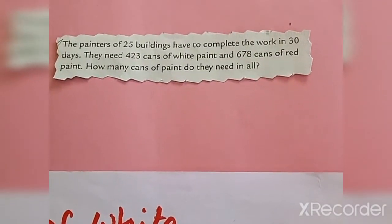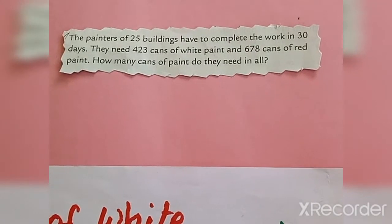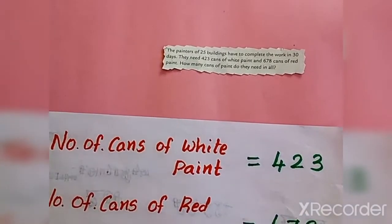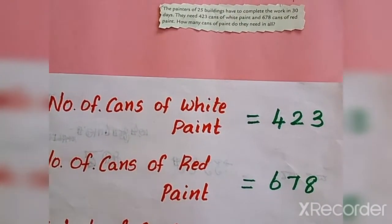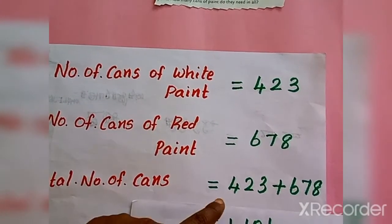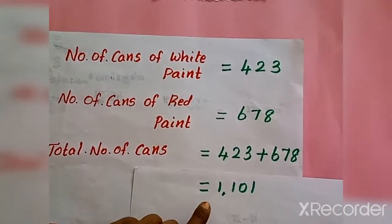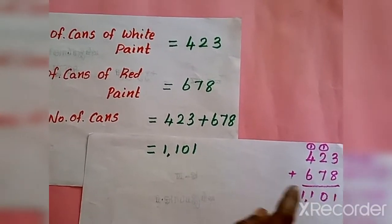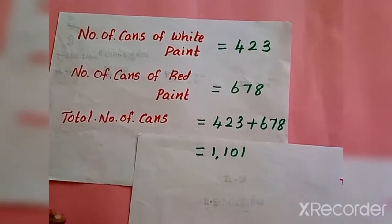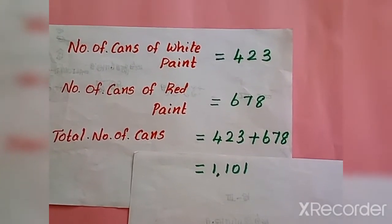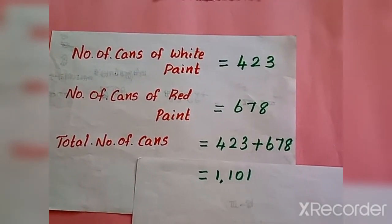In some problems, extra information is given, so you have to find the necessary information to solve the problem. The first statement is: number of white paint cans = 423. The second is: number of red paint cans = 678. Total number of cans = 423 + 678 = 1101. So in total we need 1101 cans. In these cases we have to avoid the extra information to get the correct answer.